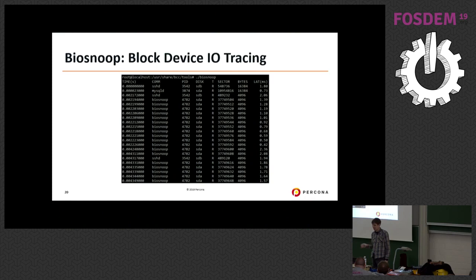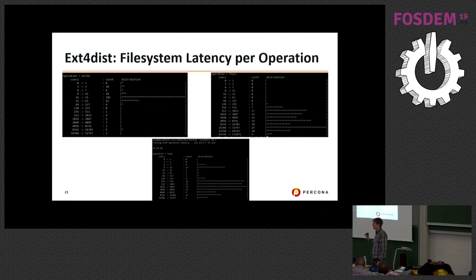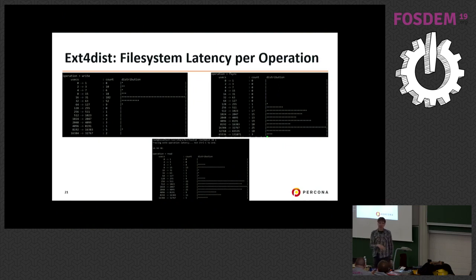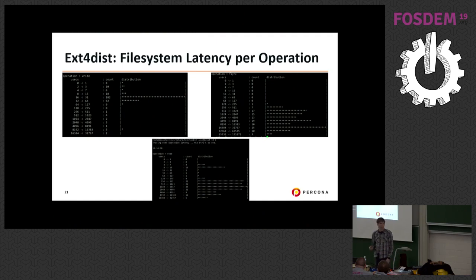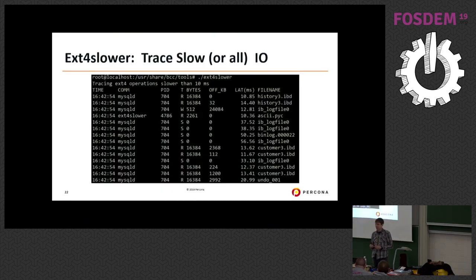Another nice tool allows you to snoop block device I/O, so if you've ever wondered whether your I/O is sequential or random, you can easily trace that and run a program to visualize your I/O pattern in more detail. There are also tools for file systems — for example for ext4, you can see how much file system operations like read, write, and fsync take, because storage or kernel reasons may cause file system stalls that impact your programs.